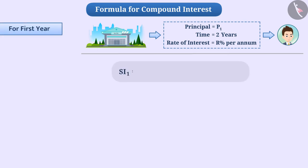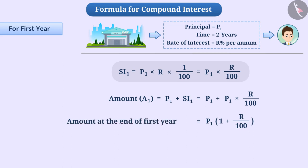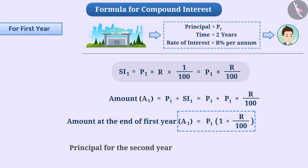For the first year, Si1 is equal to P1 multiplied by R multiplied by 1 by 100, which equals P1R by 100. The amount A1 is equal to P1 plus Si1, which equals P1 plus P1R by 100, giving us A1 equal to P1 into bracket 1 plus R by 100. This amount will be the principle for the second year, so P2 equals A1 equals P1 into bracket 1 plus R by 100.